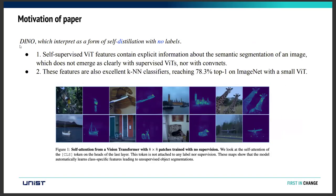Coming to the paper, they define DINO, which is interpreted as self-distillation with no labels. The first main conclusion is that self-supervised vision transformer features contain explicit information about semantic segmentation of the image, which does not emerge as clearly with supervised vision transformers. As shown in figure one, they provide self-attention maps from a vision transformer with no supervision, showing the model can automatically learn class-specific features leading to unsupervised object segmentation.